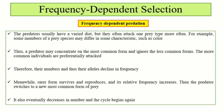So, more common individuals are preferentially attacked. With the passage of time, the number of common-form individuals in the population will decrease, and the alleles that code for that particular form also decrease — their frequency also declines. At that time, the rare form is surviving and successfully reproducing, so with successive generations the rare form's frequency, abundance, and allelic frequency will increase.